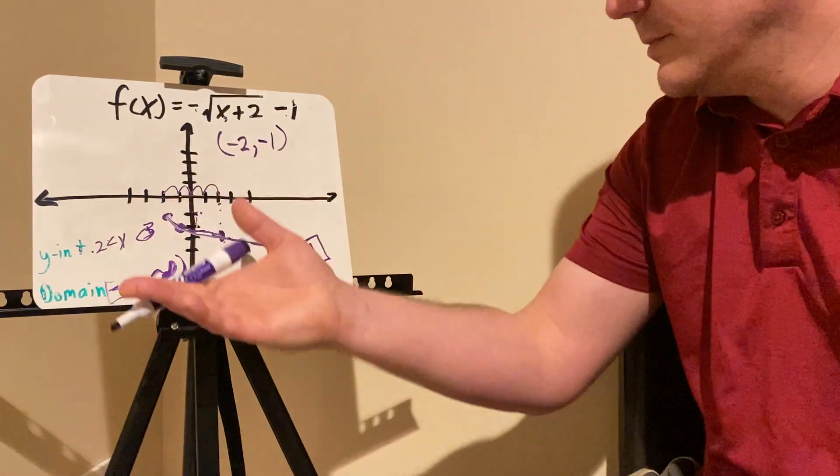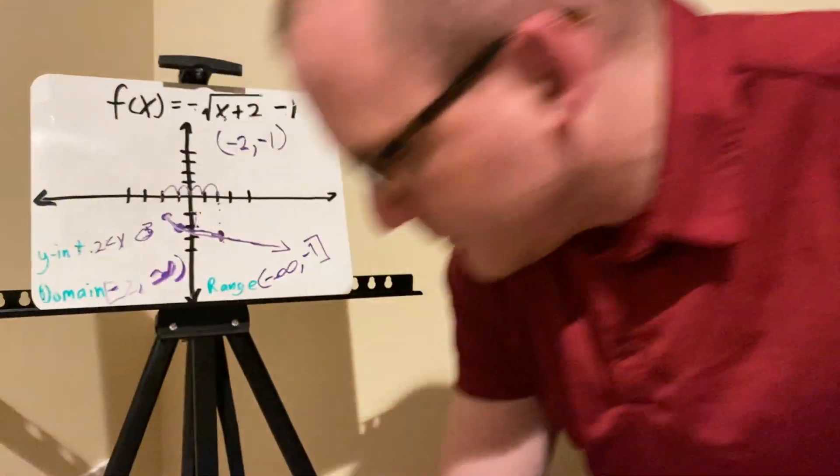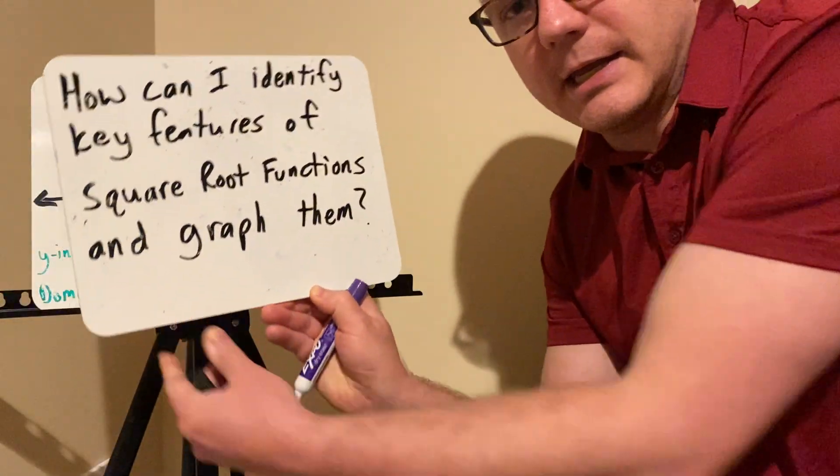This is how you would identify some basic key features and square root functions and how to graph them.